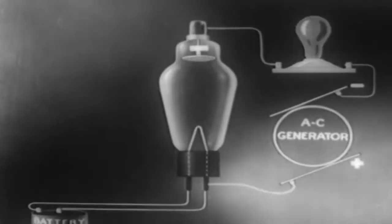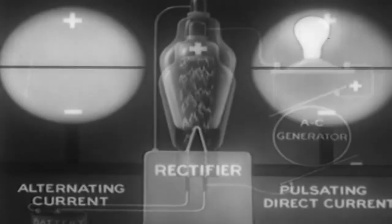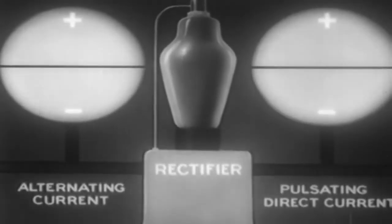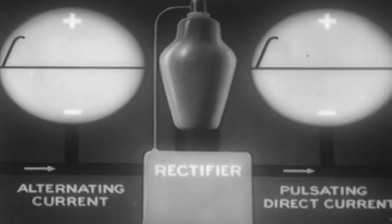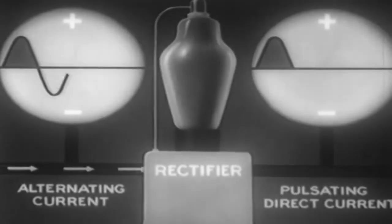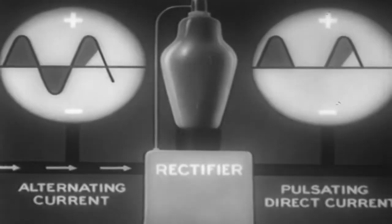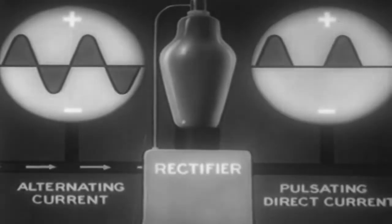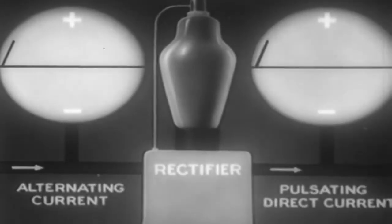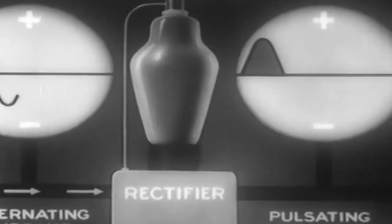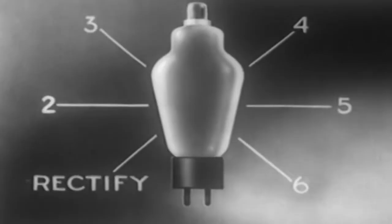We can visualize the result of the tube's rectifying action with the aid of these two oscilloscopes. The one on the left shows alternating current coming in. The one on the right shows pulsating direct current going out. We can use it to rectify.